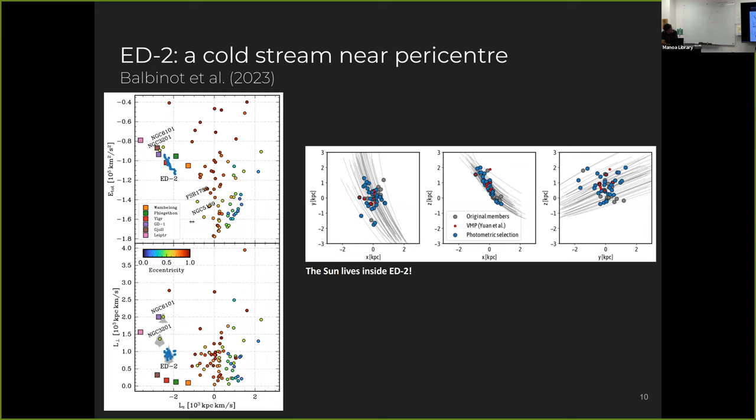And when we look at ED-2 in the integrals of motion, you can see in Lz energy, the plot that you're going to see a lot in this talk, you can see ED-2 is the blue stars there. And then when we plot the position of ED-2 in Cartesian coordinates, what you can see is that in the middle panel there on the right plot, the x and z components of the position, you can see that it forms this really nice linear feature.